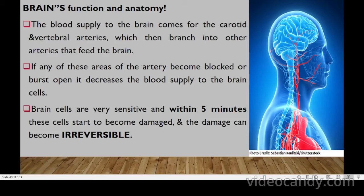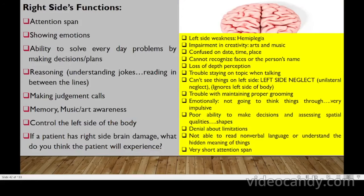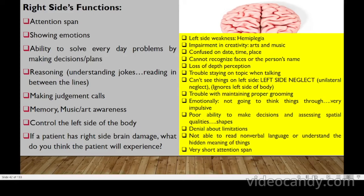Brain cells are very sensitive — within five minutes, cells begin to be damaged and damage can become irreversible, so we must act as quickly as possible. Strokes tend to affect one side of the body. The right side of the brain is the creative side, controlling attention span, emotions, problem-solving, decision-making, reasoning, judgment, music awareness, and the left side of the body.